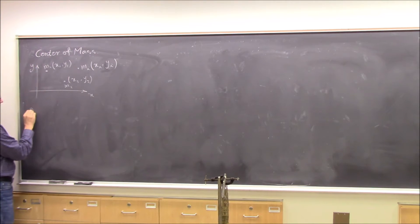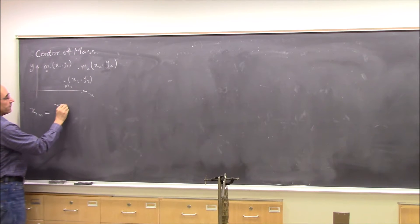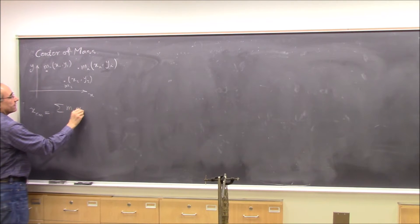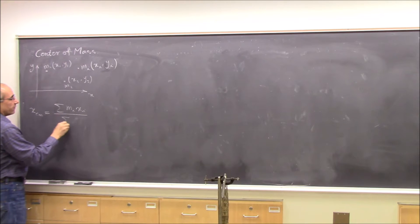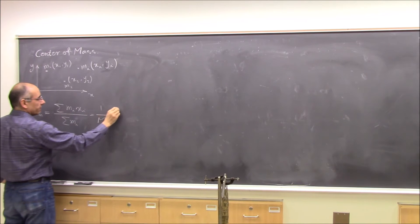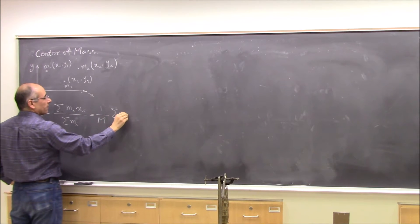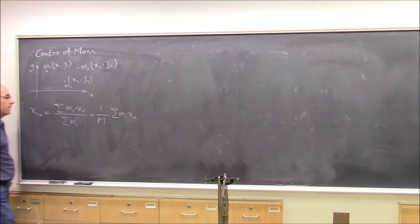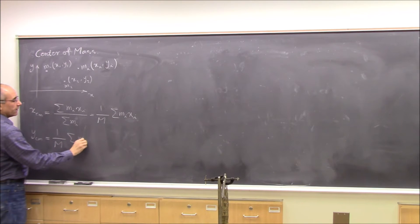X of center of mass is sum of all mi xi divided by sum of mi, which we usually call capital M. So it's 1 over M times sum of mi xi. And y of center of mass is the same way: 1 over M and sum of mi yi.